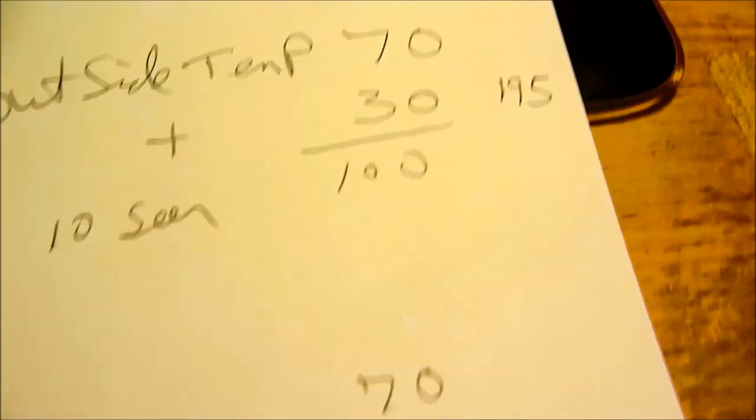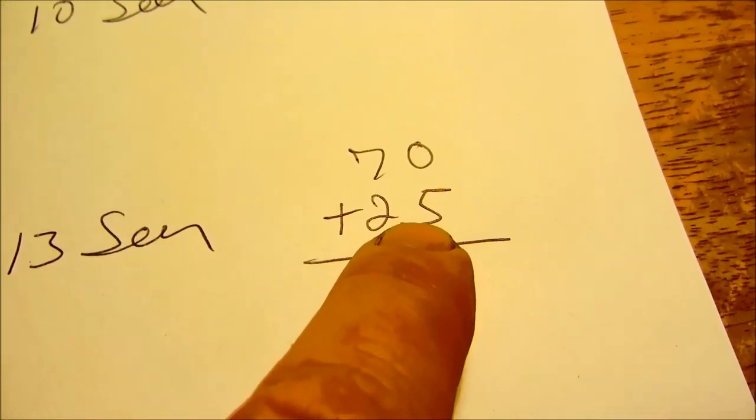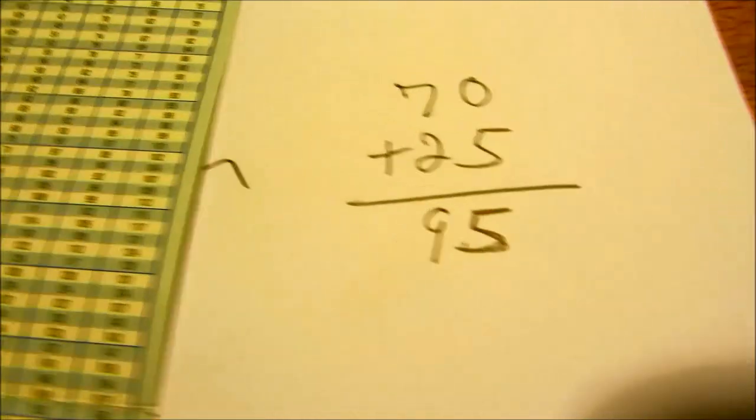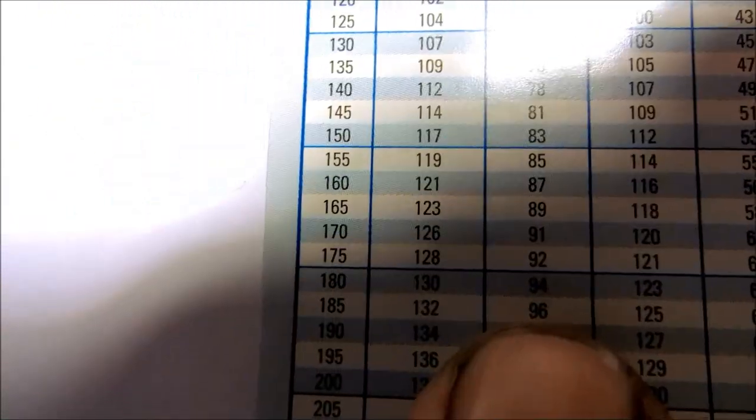On a 13 SEER you drop down to 25. The higher the SEER, the lower the number. So 70 plus 25 is 95. On the R-22 scale you go to 95, we'll say 94.